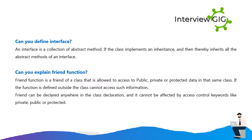Can you define interface? An interface is a collection of abstract methods. If the class implements an interface it thereby inherits all the abstract methods of that interface. Can you explain friend function? Friend function is a friend of a class that is allowed to access public, private or protected data in that same class. If the function is defined outside the class it cannot access such information. Friend can be declared anywhere in the class declaration and it cannot be affected by access control keywords like private, public or protected.